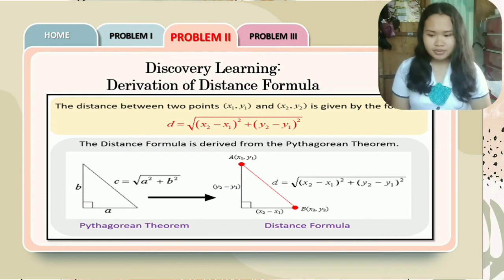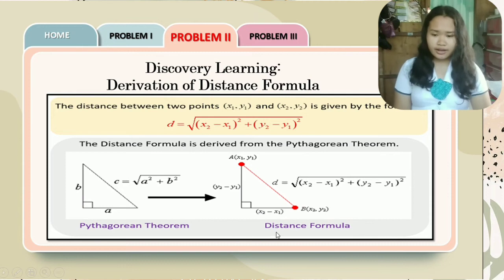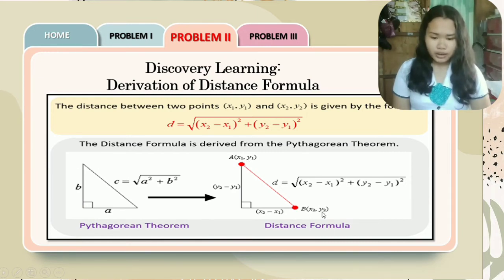As we all know, the Pythagorean theorem is stated as c, which is the hypotenuse, equals square root of the quantity a squared plus b squared. The same with computing the distance between two points. As we plot point A as x sub 1 and y sub 1, while B is x sub 2 and y sub 2 coordinates, we have formed here a right triangle with right angle.